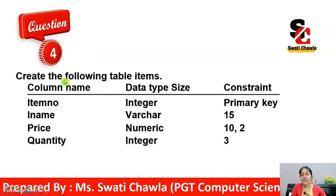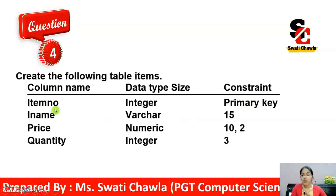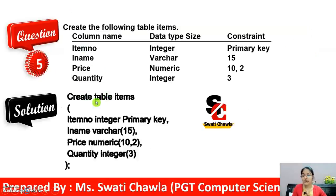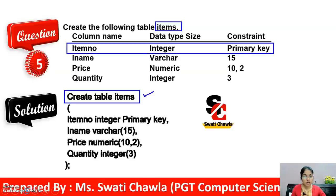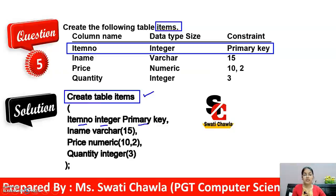Now see this question: create the following table 'items'. The structure shows: column name is item_number, data type integer, and set as primary key. So write CREATE TABLE items, then open the bracket, and write: item_number INTEGER PRIMARY KEY — then add a comma. Next column is item_name with VARCHAR and size 15.